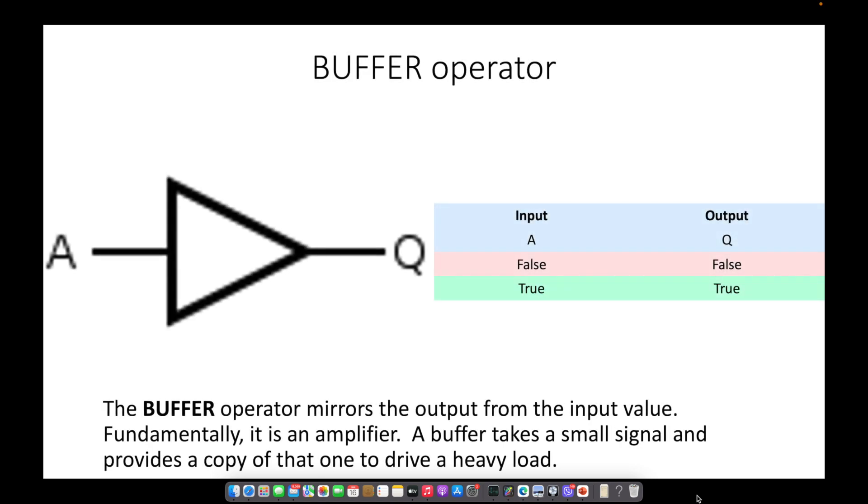The buffer operator mirrors the output from the input value. Fundamentally, it is an amplifier. A buffer takes a small signal and provides a copy of that one to drive a heavy load.